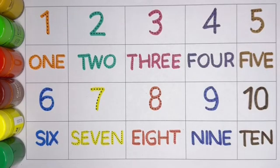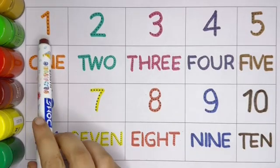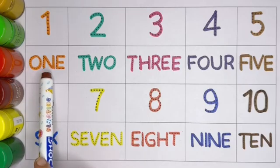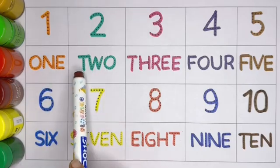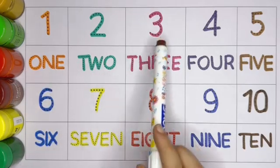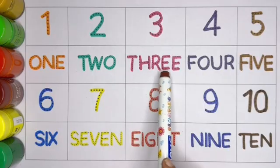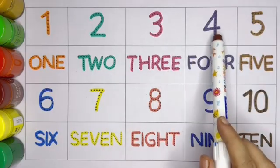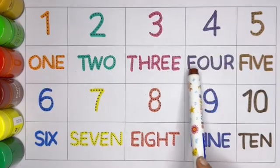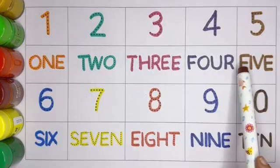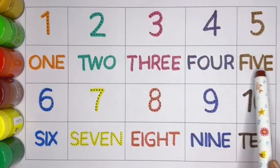Let's repeat again. 1, O-N-E, 1. 2, T-W-O, 2. 3, T-H-R-E-E, 3. 4, F-O-U-R, 4. 5, F-I-V-E, 5.